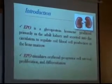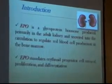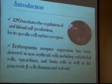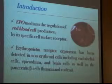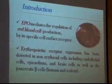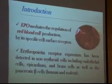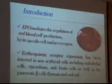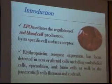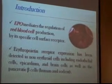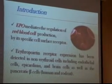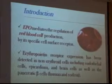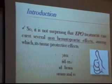Erythropoietin stimulates erythroid progenitor cell survival, proliferation, and differentiation. It regulates red blood cell production through its specific cell surface receptor. Erythropoietin receptor expression has been detected in non-erythroid cells including endothelial cells, epicardium and brain cells, as well as pancreatic beta cells.